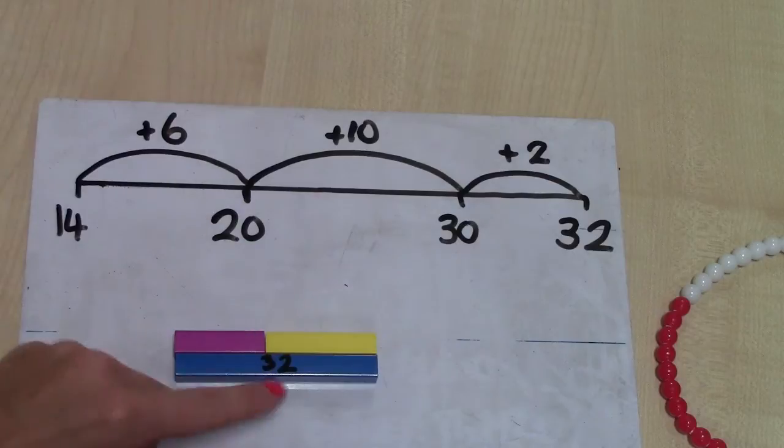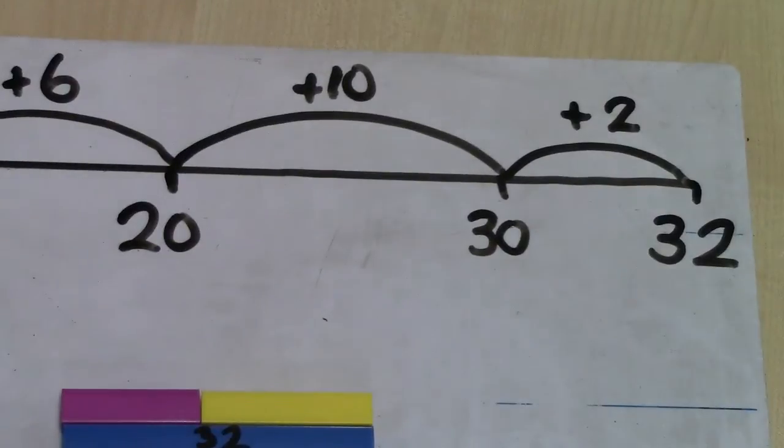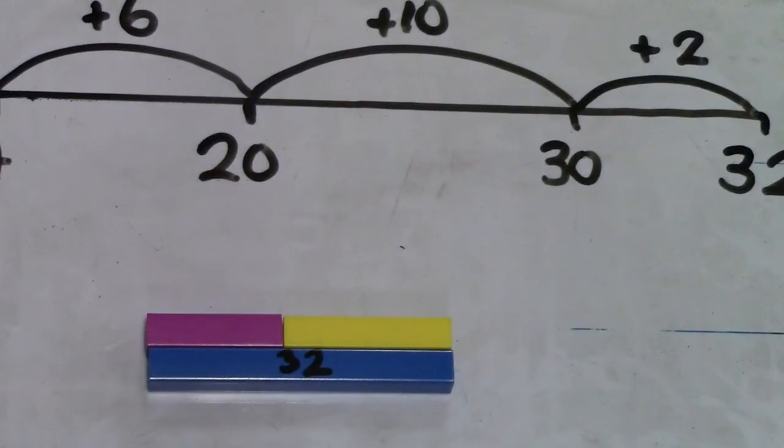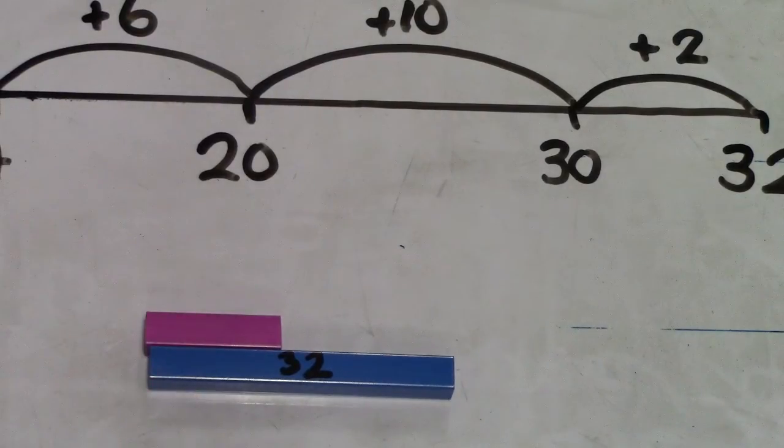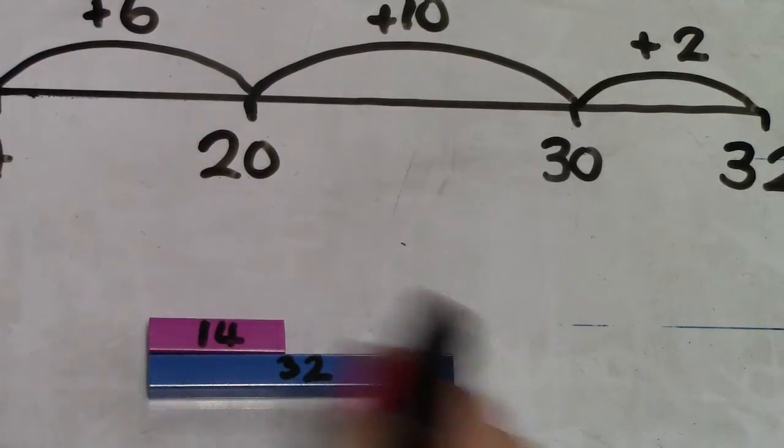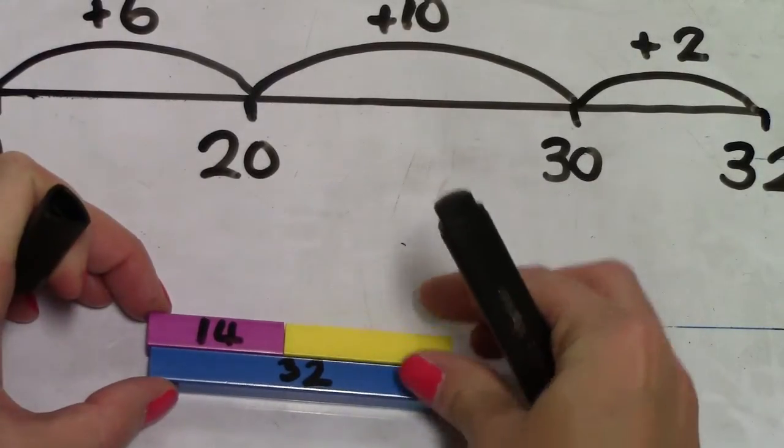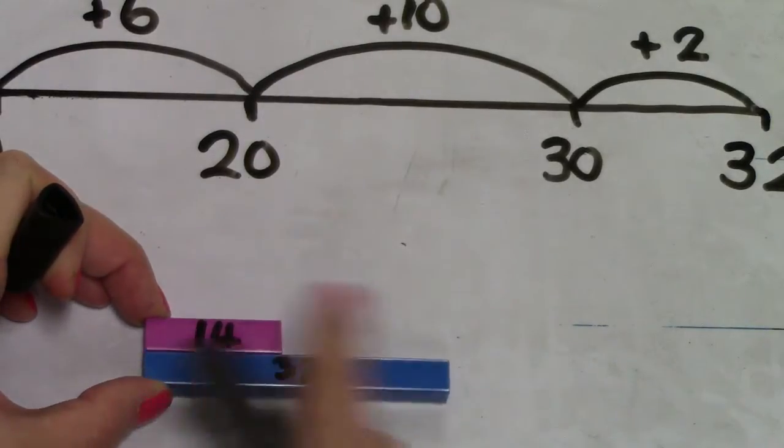You're able to write on Cuisenaire with whiteboard pens, which is what I've done here. So we're finding the difference between 32 and 14. So I'm going to write 14 on here. We want to find out what this piece is. So 14 and 32, we're comparing them.